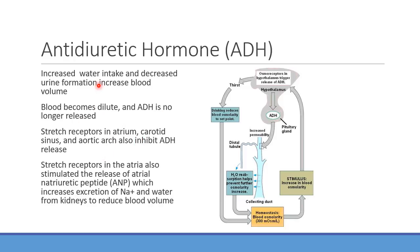As blood becomes dilute, ADH release is inhibited — another negative feedback loop. Additionally, stretch receptors in the carotid sinus and aortic arch, when stretched due to excess blood volume, also inhibit ADH release. This makes sense: ADH increases blood volume, so if volume is already high, you don't need more ADH. Multiple inputs can feed back and inhibit the system.